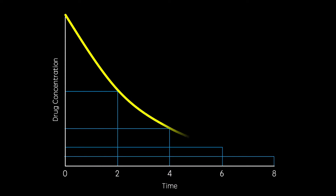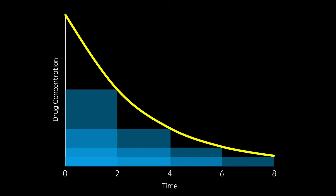This means after one half-life the concentration will have halved, in two it will have quartered, and in three it will have eighth, and so on.